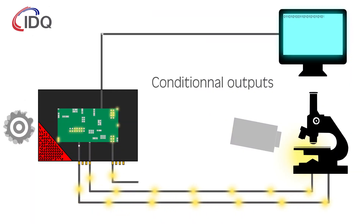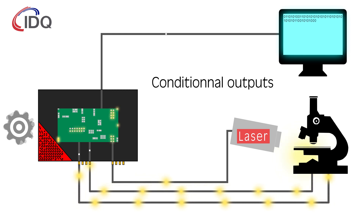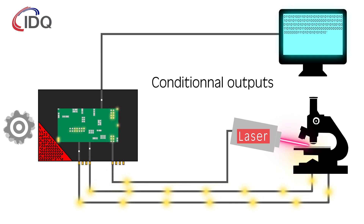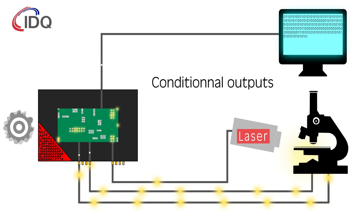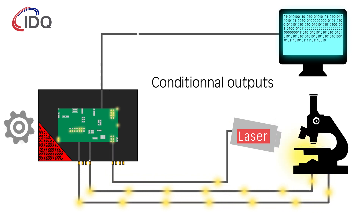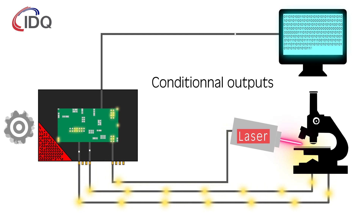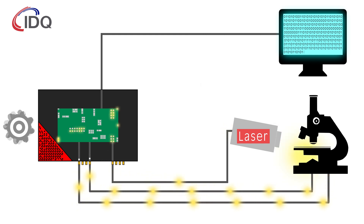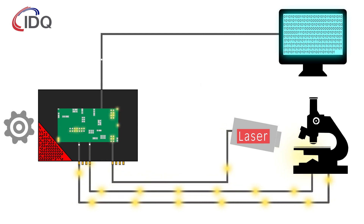The time controller truly becomes a unique device through the use of the processing's results for the conditional generation of output signals. These pulses can, for example, be used to trigger a laser or a gated detector to perform a conditional measurement or a state preparation in real-time.